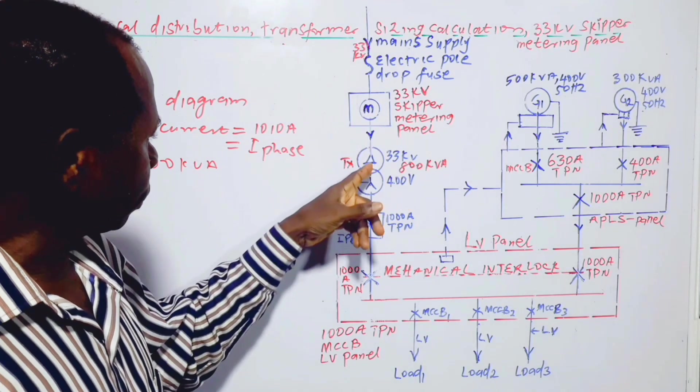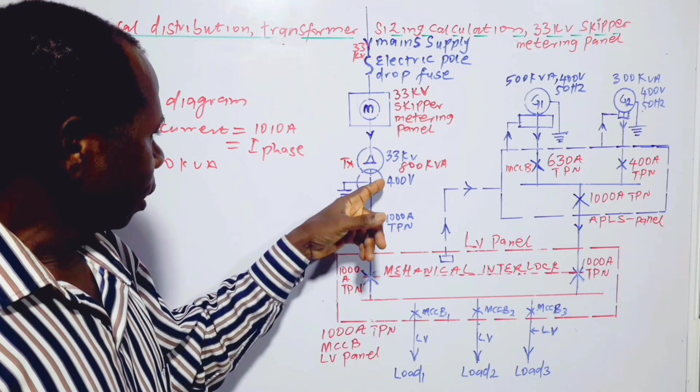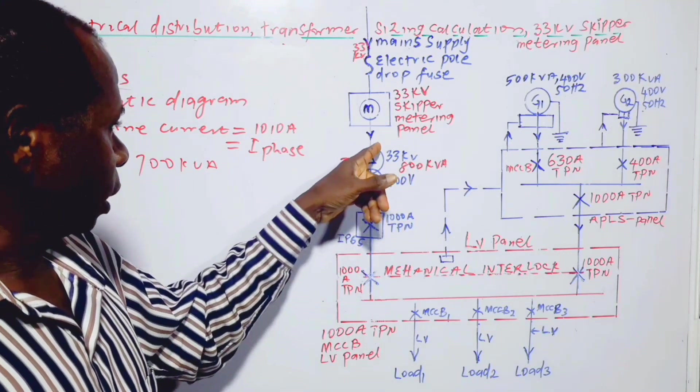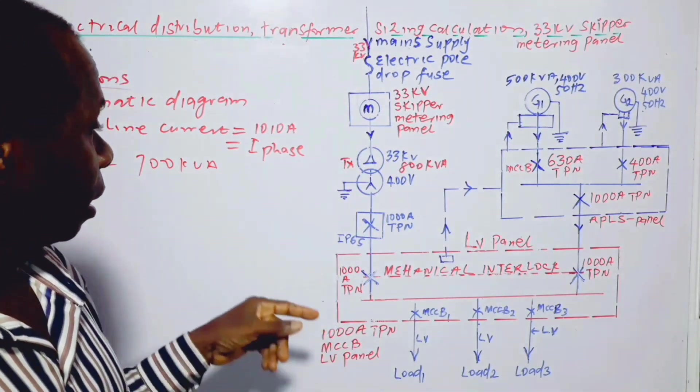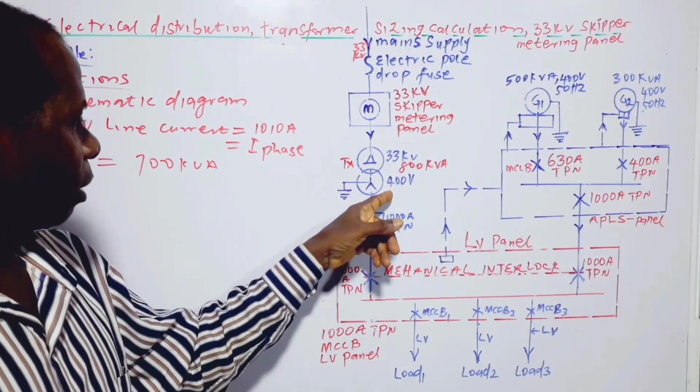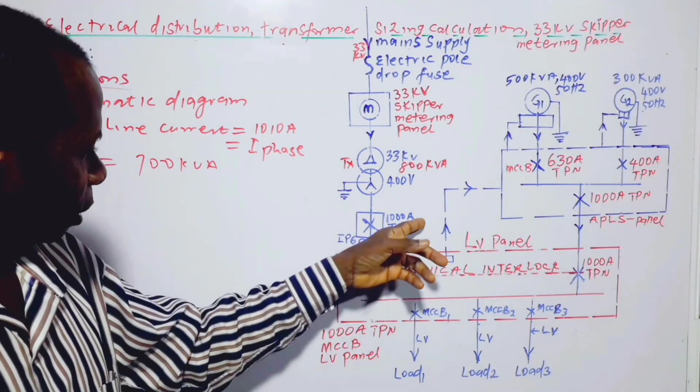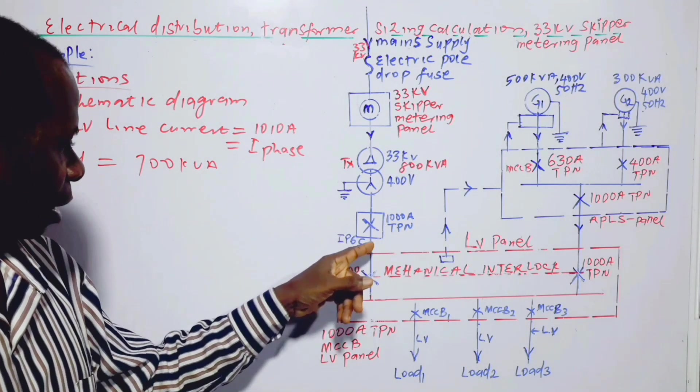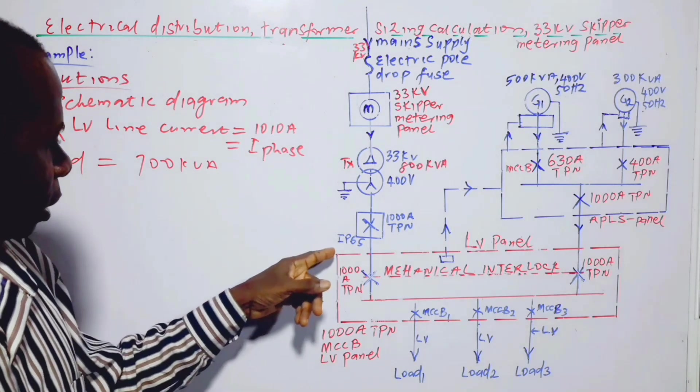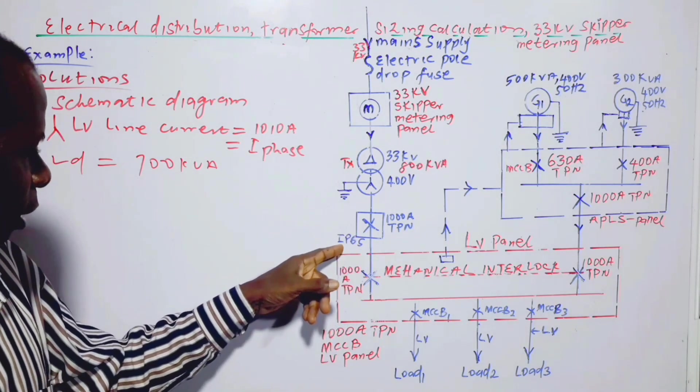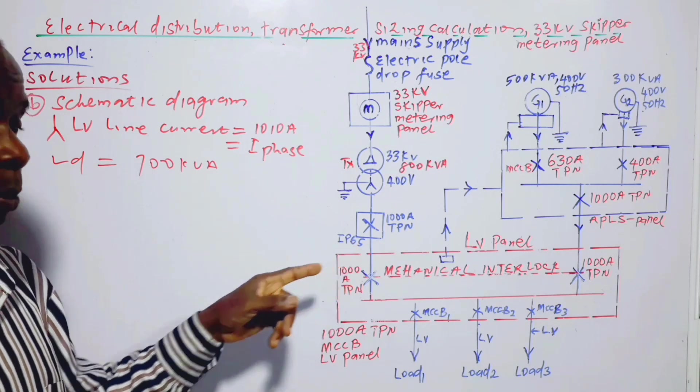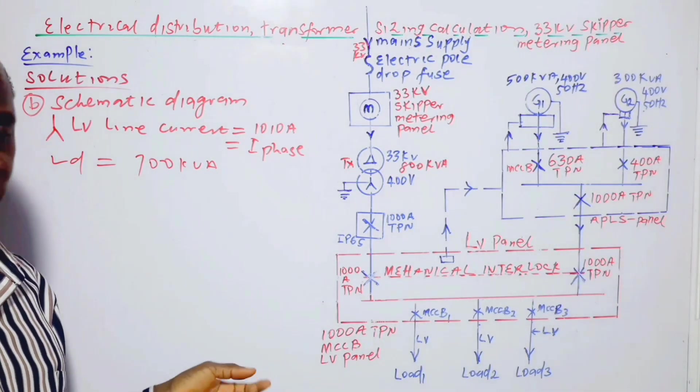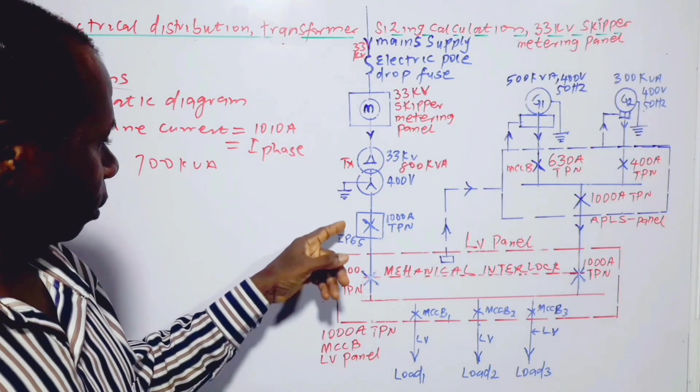So we move on. After the metering, we have 800 kVA transformer, this transformer with the primary side at 33 kVA and the secondary side at 400 volts. We step it down, we protect the transformer with a 1000 ampere triple phase with neutral MCCB. That is molded case circuit breaker. This IPC swap means ingress protection in case it's installed outside or in store out of. So it has to be waterproof, it has to be enclosed. This side, it can also be called encapsulated MCCB.